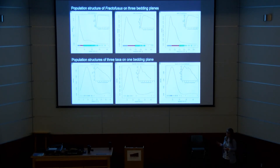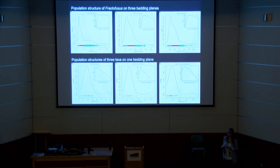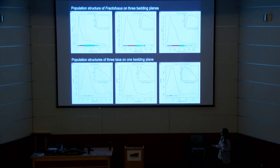Perhaps the smaller individuals, if they're in the clusters of clusters as Emily has shown in her work on Fractifusis, are feeling more intense competition than the larger ones. These taxa from Charnwood Forest show a break at around the 20-25 centimetre range, with a couple of really large individuals and a normally-distributed bunch of much smaller ones.